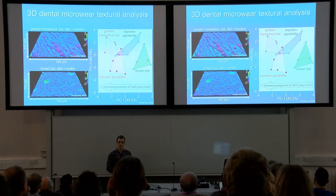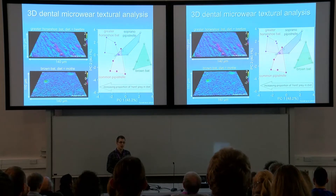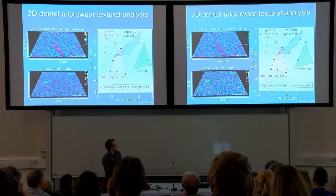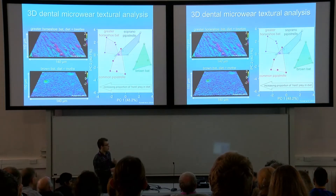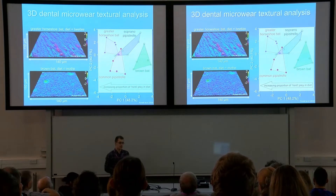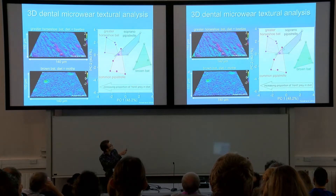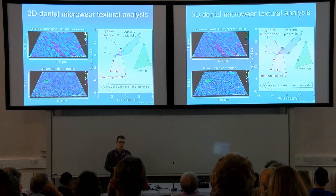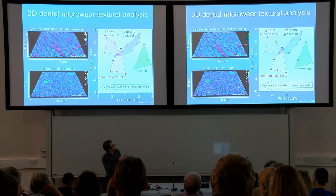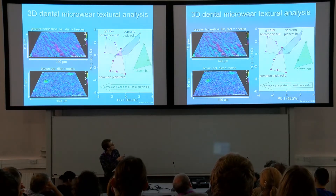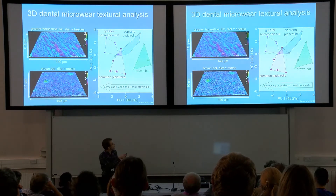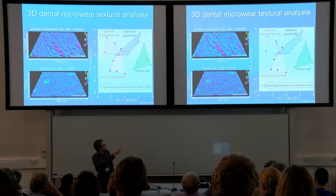The material properties of different food items can determine the types of wear patterns that form. These two images here are roughness surfaces — 110 by 140 microns in size — taken from the premolars of two modern bats: the horseshoe bat and the brown bat. These pink areas denote troughs roughly 2 microns in depth, which are larger and more numerous in the horseshoe bat, so this one can be said to be the rougher tooth surface.